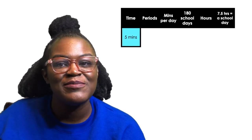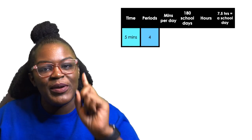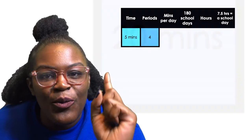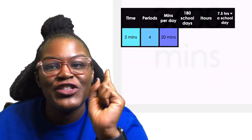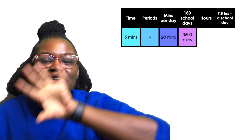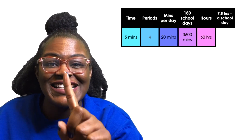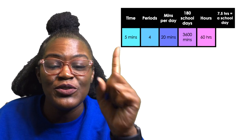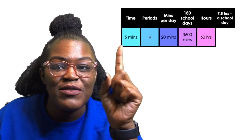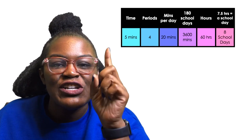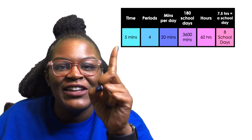So, you want to pack up five minutes before the bell, and you have four periods every day. That's 20 minutes a day. That's 3,600 minutes over the course of 180 school days, and that's going to turn into 60 hours. If each school day is seven and a half hours, that's going to be eight school days by the end of the school year.